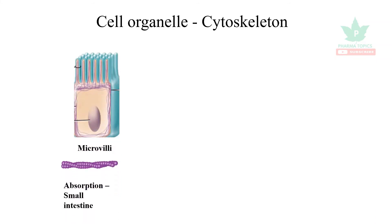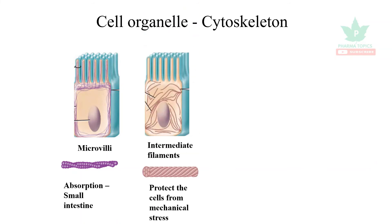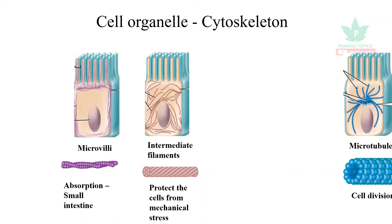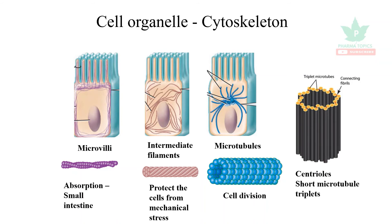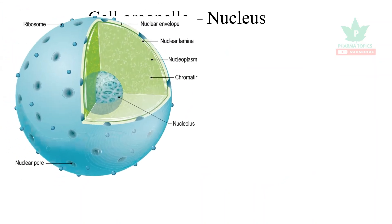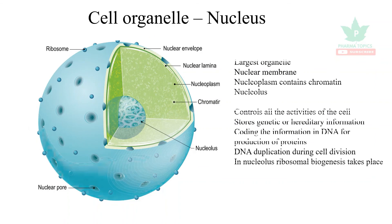The next organelles are the cytoskeleton, which gives shape and structure to the cells. First are microvilli, concerned with absorption in the small intestine. Next are intermediary filaments, which protect cells from mechanical stress. Finally, microtubules are concerned with cell division and contain centrioles, which are short triplets of microtubules.